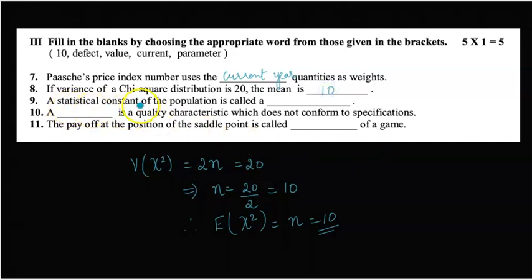Ninth: a statistical constant of the population is called a parameter. Tenth: a defect is a quality characteristic which does not conform to specifications. Eleventh: the payoff at the position of the saddle point is called the value of a game.